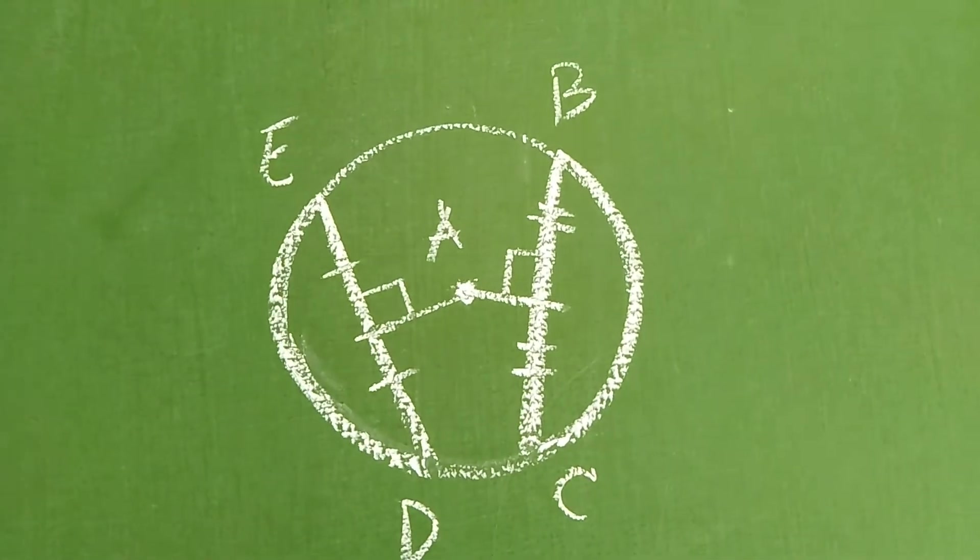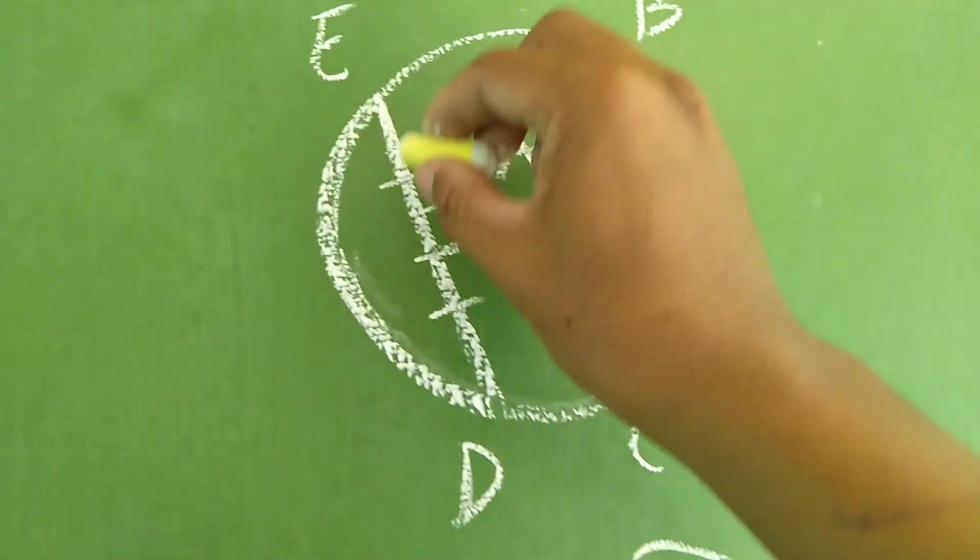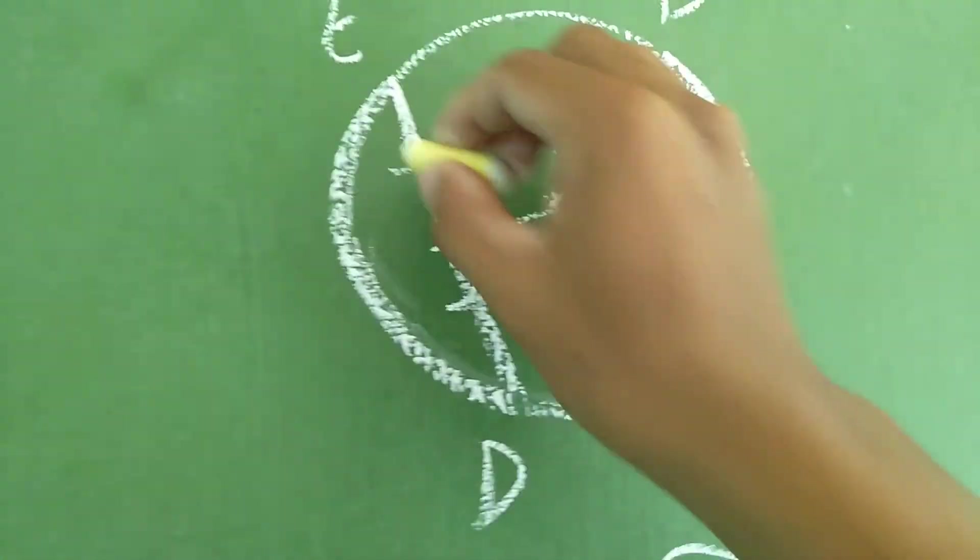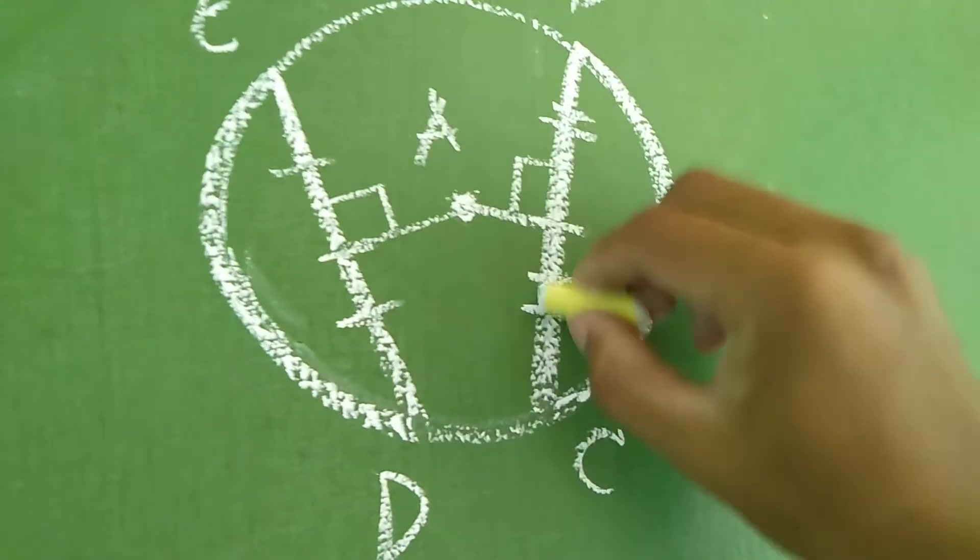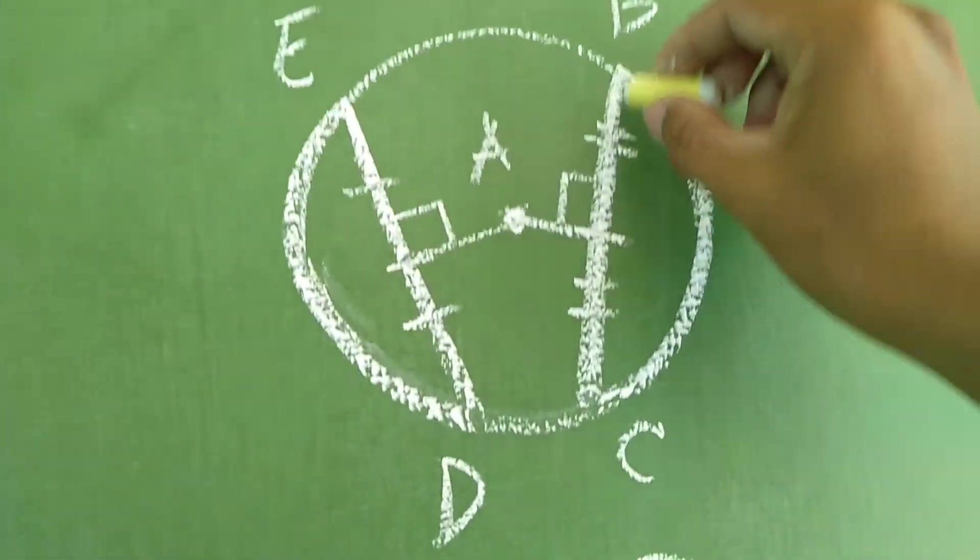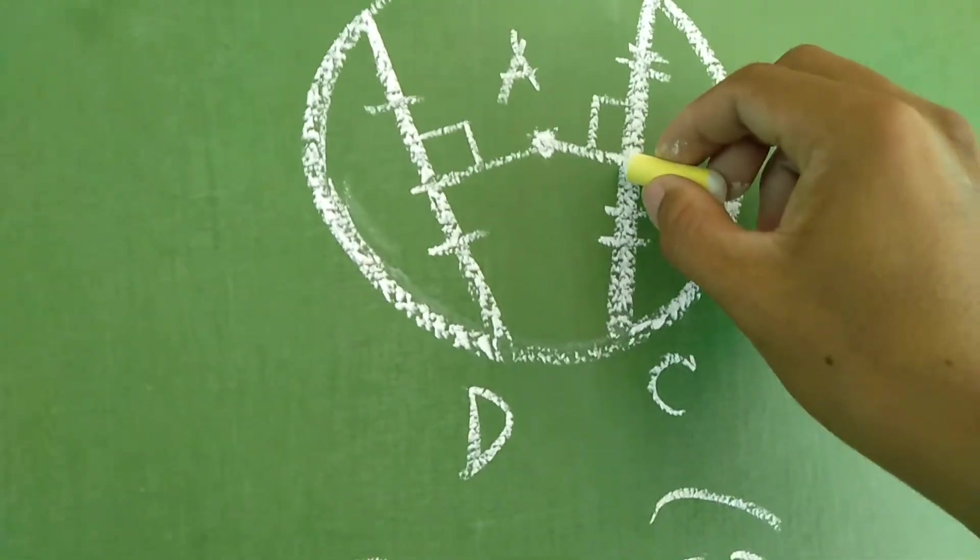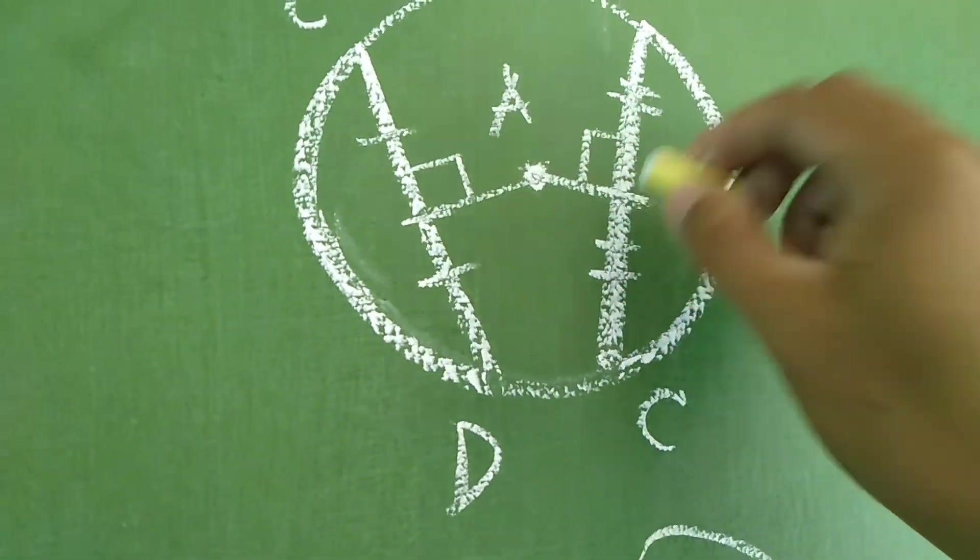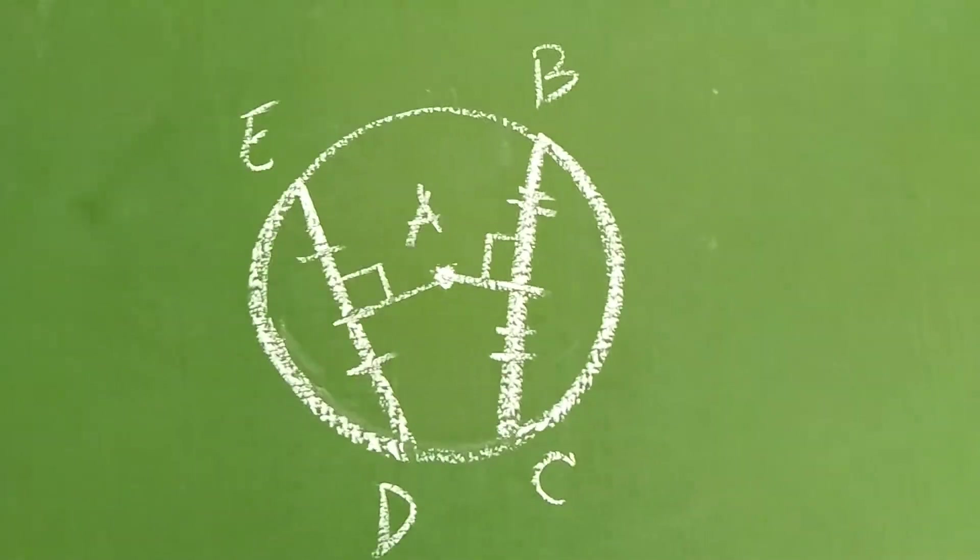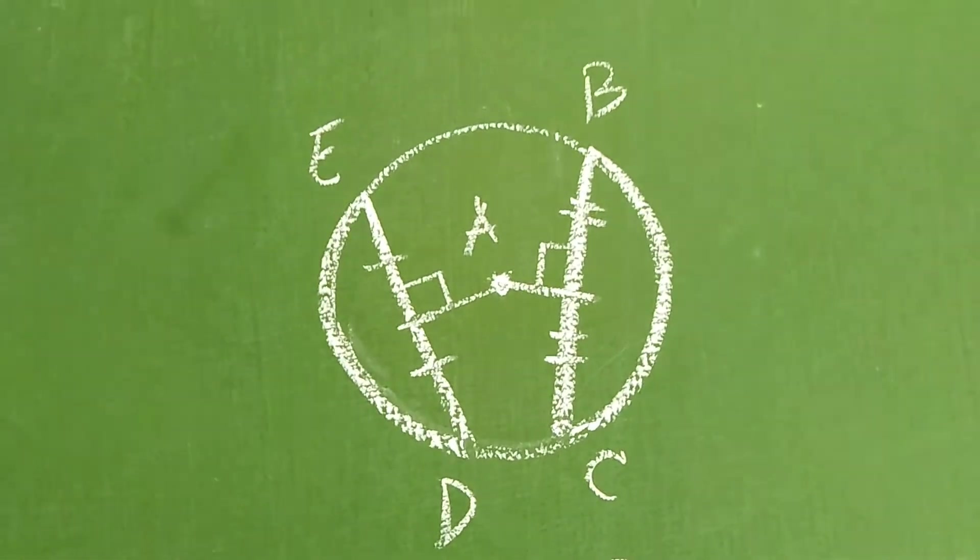Okay? Next, yung markings na ito, kaya tigi isa lang siya, kasi ibig sabihin, they are congruent or they are equal. Eto naman po, tigda dalawa, that means, yung line na ito is equal or congruent sa line na ito. Why? Kasi nabisect po natin siya, so ibig sabihin nabisect, na-divide po natin, na-hati muna into two equal parts.